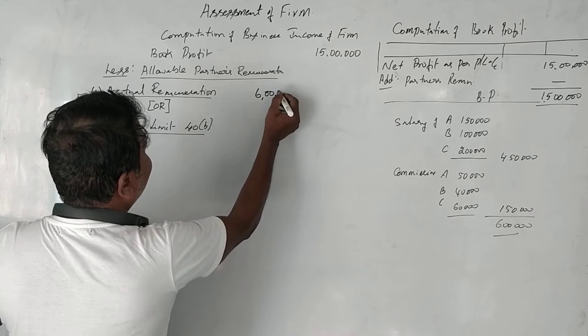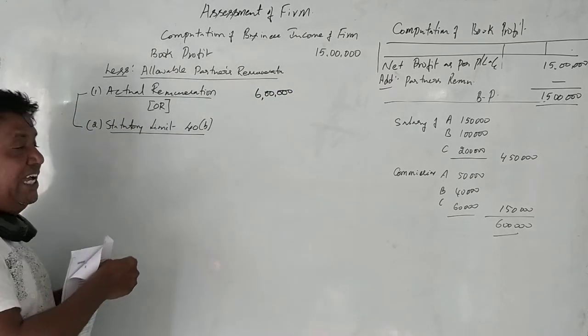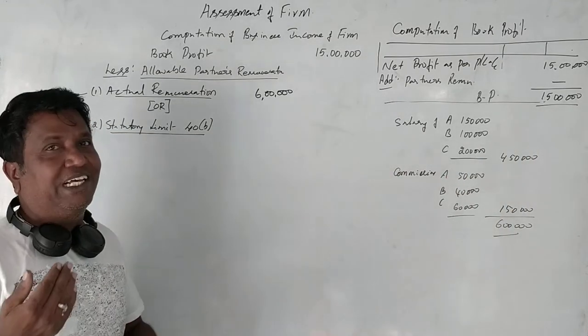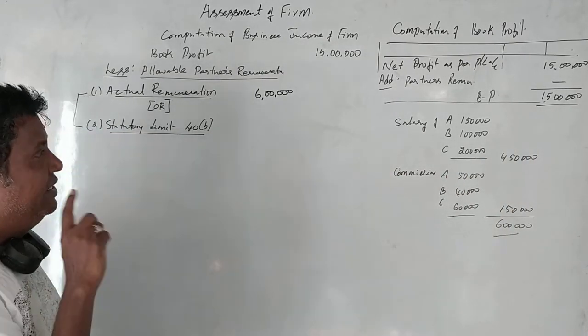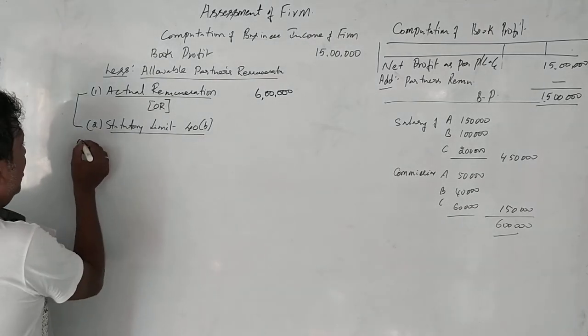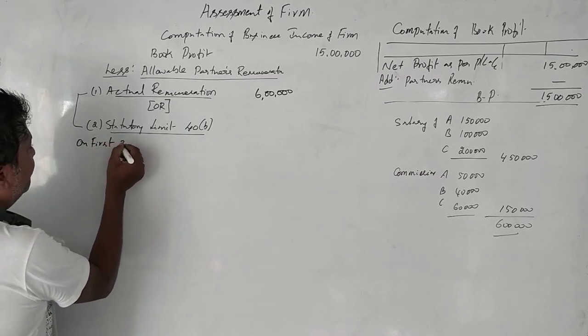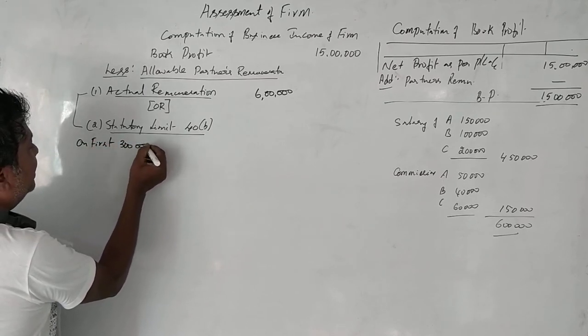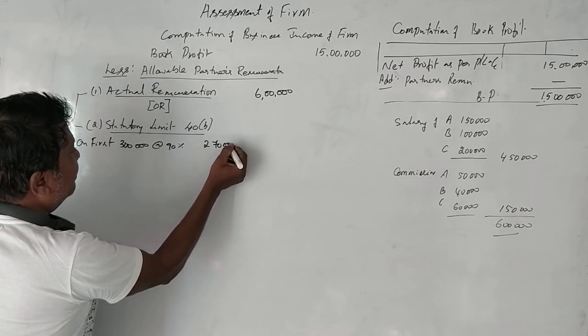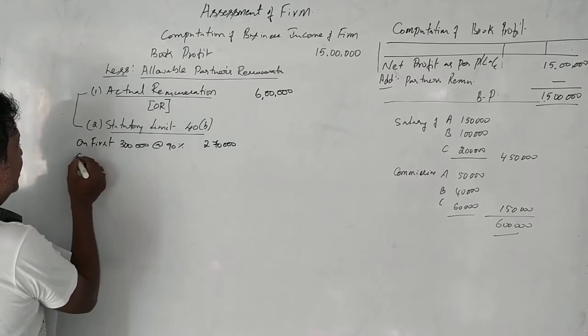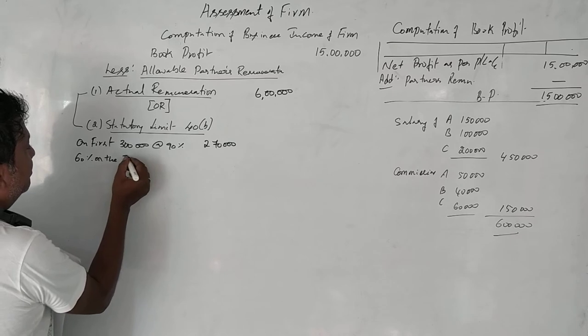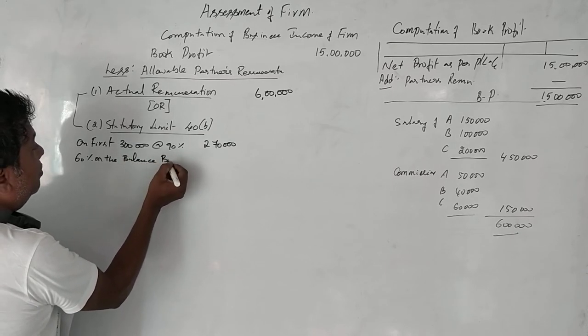Now we'll come to the statutory limit. Since the book profit is more lakhs. On first 3,00,000 rupees at 90%, that's 2,70,000. And 60% on the balance book profit. Total 9,00,000 rupees.